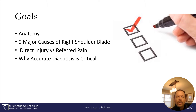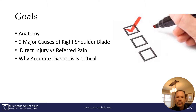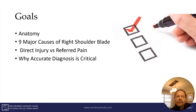The goals of this presentation are to review some basic anatomy, to discuss the nine major causes of right shoulder blade pain, to discuss direct injury to structures in the shoulder versus pain that's perceived in the shoulder — otherwise known as referred pain — and why an accurate diagnosis is so important.